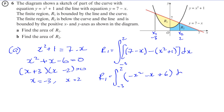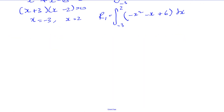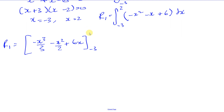Let's simplify and then integrate. The integrand simplifies to minus x squared minus x plus 6. Integrating gives minus x cubed over 3, minus x squared over 2, plus 6x. We don't need the plus c since this is a definite integral, evaluated between limits minus 3 and 2.